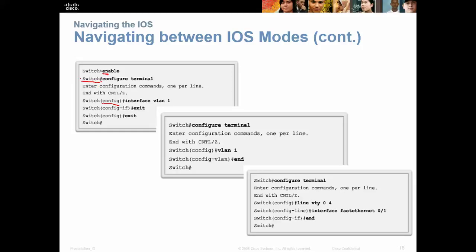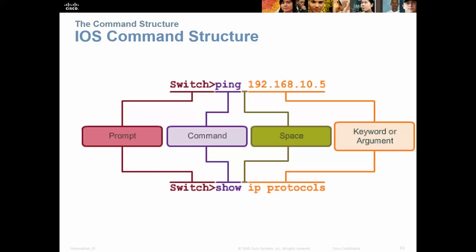After typing configure terminal, you're in global configuration — you can see 'config' as a visual clue. From there, configuring VLAN 1 changes the prompt to 'config-VLAN.' There's also 'config-Line' when in line VTY, and 'config-IF' when in an interface such as fastethernet 0/1. Typing end takes you back to privileged exec mode, and then you can exit back out to user exec mode.